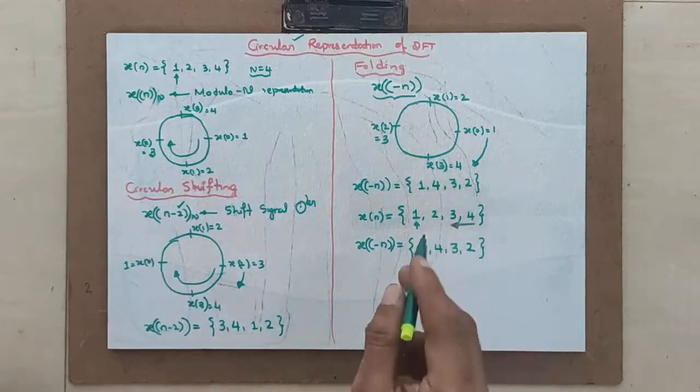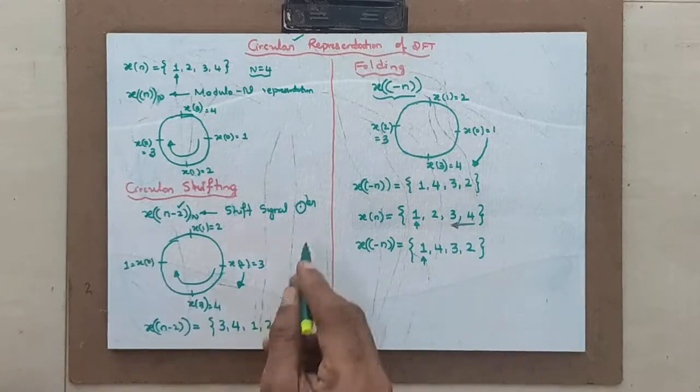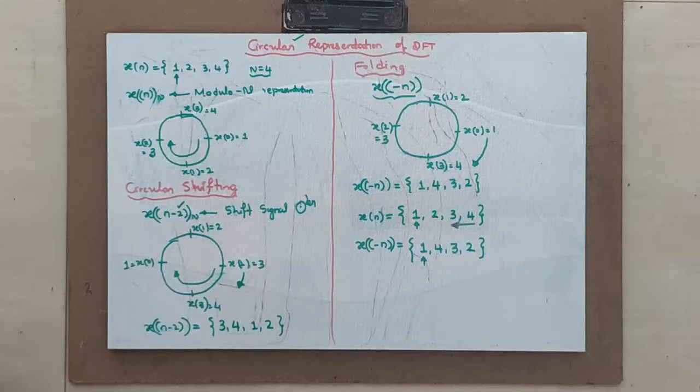Similarly, shifting can be done in the folding signal also. So, this is how the circular representation takes place. This is a very important property. Very important property, which one should understand. If any doubts are there in the representation, circular representation of a given DFT signal or given signal, you can contact me regarding this. If you are not getting no further understanding regarding different solutions is not at all possible. Hence, please see to that. You are confident about circular representation of a DFT. Hence, you go through this video very seriously.